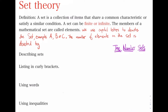We want to start off by looking at the definition. When we talk about a set, we're talking about a collection of items that share a common characteristic or satisfy a similar condition. A set can be finite, which means we can list out all the elements inside of the set, or infinite, which means we cannot list out all the elements inside of the set.